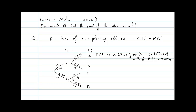For outcome B — student 1 completes, student 2 does not — it's the probability of student 1 completing (0.16) times student 2 not completing (0.84), which gives 0.1344. Outcome C — student 1 not completing, student 2 completing — is 0.84 × 0.16, the same result: 0.1344.